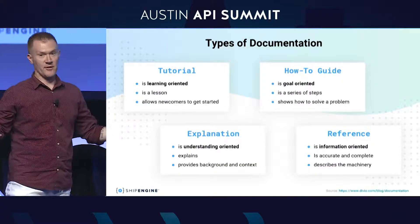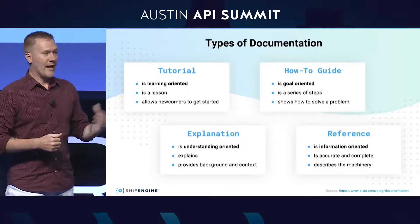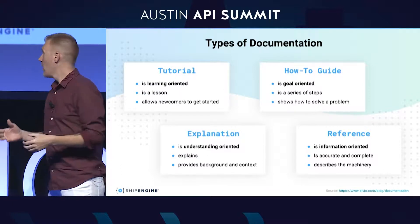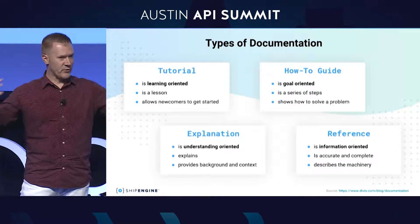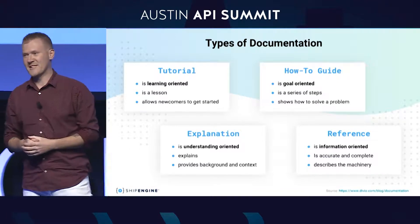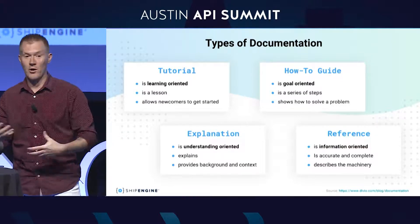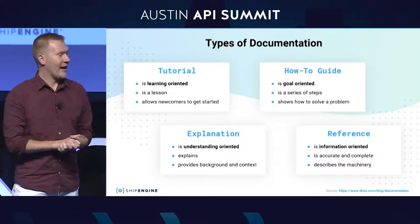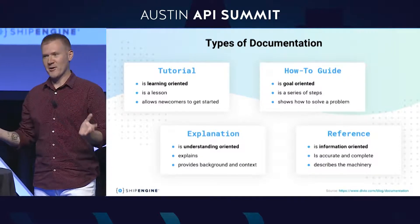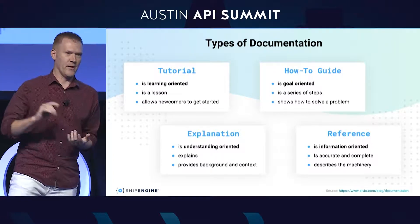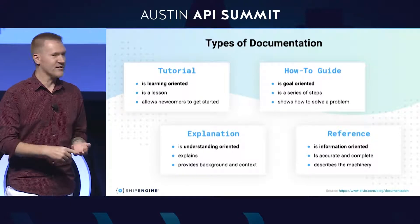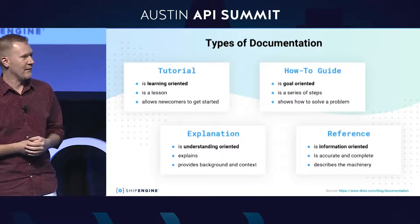Explanations are your broad concepts. For an API, an explanation is not going to be about a specific endpoint or a specific feature of your product — it's about the domain things you need to know in order to effectively use this product. In the shipping and logistics space, we've got broad concepts about how logistics work, how warehousing works, and that kind of thing. And then finally you've got your reference docs. Reference docs are what every developer expects you to have — the information they need to do their job: what endpoints you have, what headers they require, what fields they can set, which ones are required, which ones are optional.